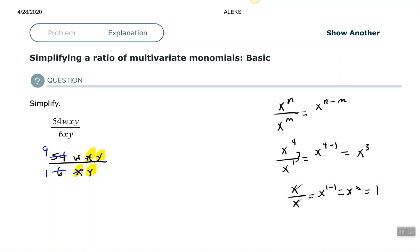Now, the Y to the first in the numerator with the Y to the first in the denominator, they cancel each other out, just as we showed over here where we have X over X. They cancel each other out and that equals one.